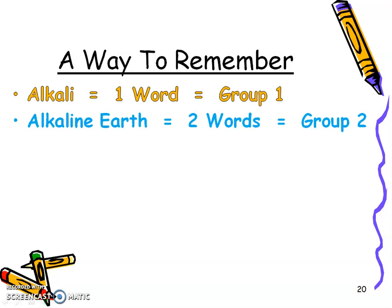And I like to remember that group 1 is one word, alkali, and group 2 is two words, alkaline earth metals. So it's a way to remember group 1 and 2. And plus A is the beginning of the alphabet, right? So it's the first two rows start with the A, because the alphabet starts with A. And then we have one word versus two words.